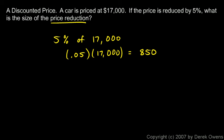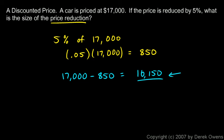We weren't asked to find the new price, but that's useful to know. So let's calculate $17,000 minus $850 — the new price is $16,150, and at that price it's more likely to sell. Just be aware that the $850 is the answer to the question, because we were asked what is the size of the price reduction.